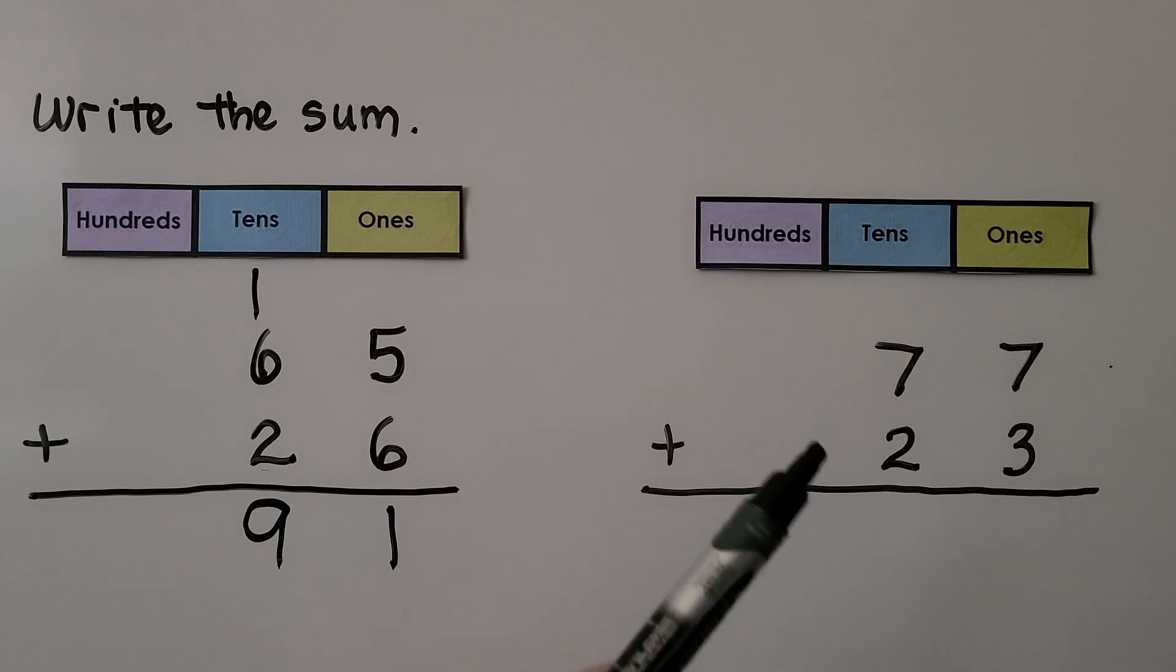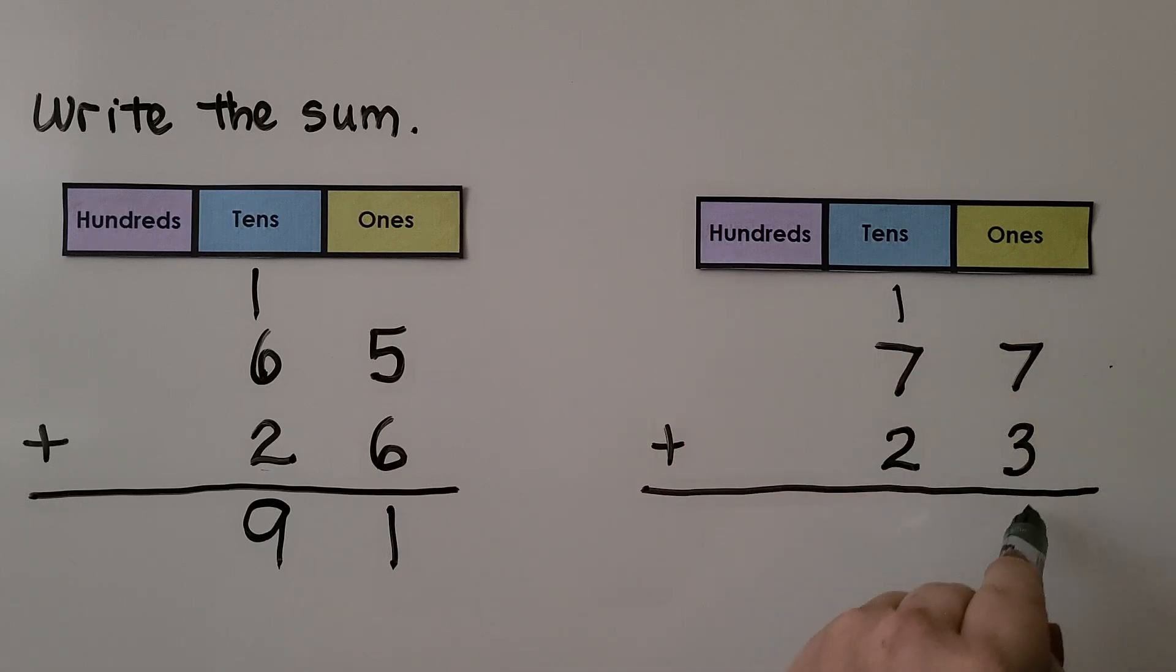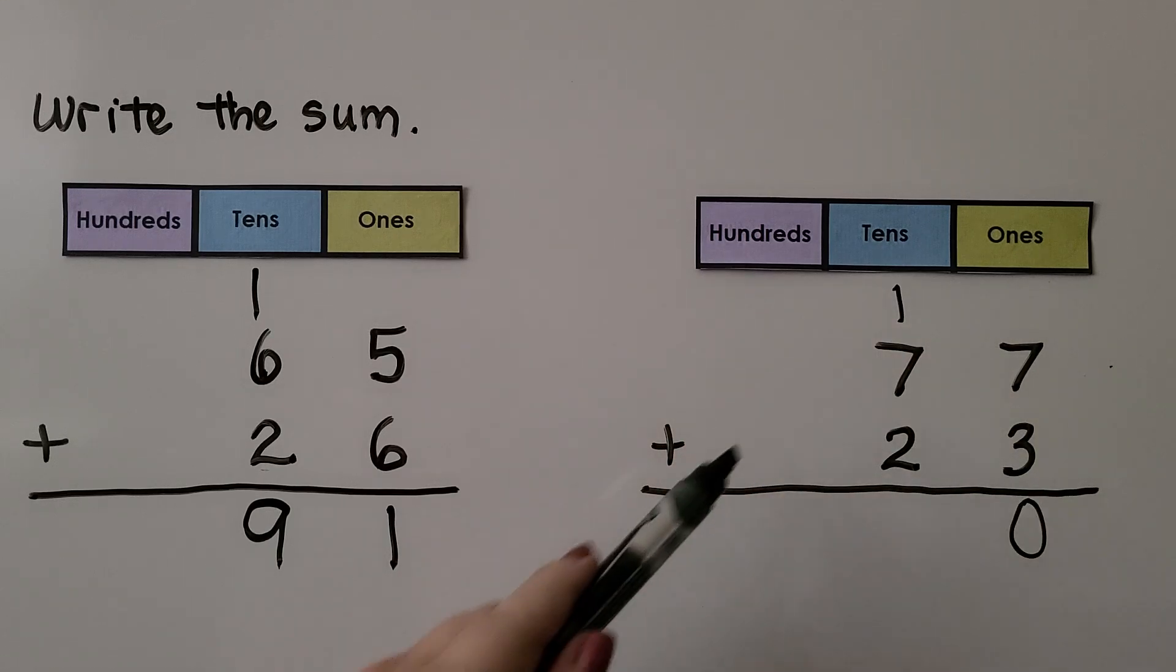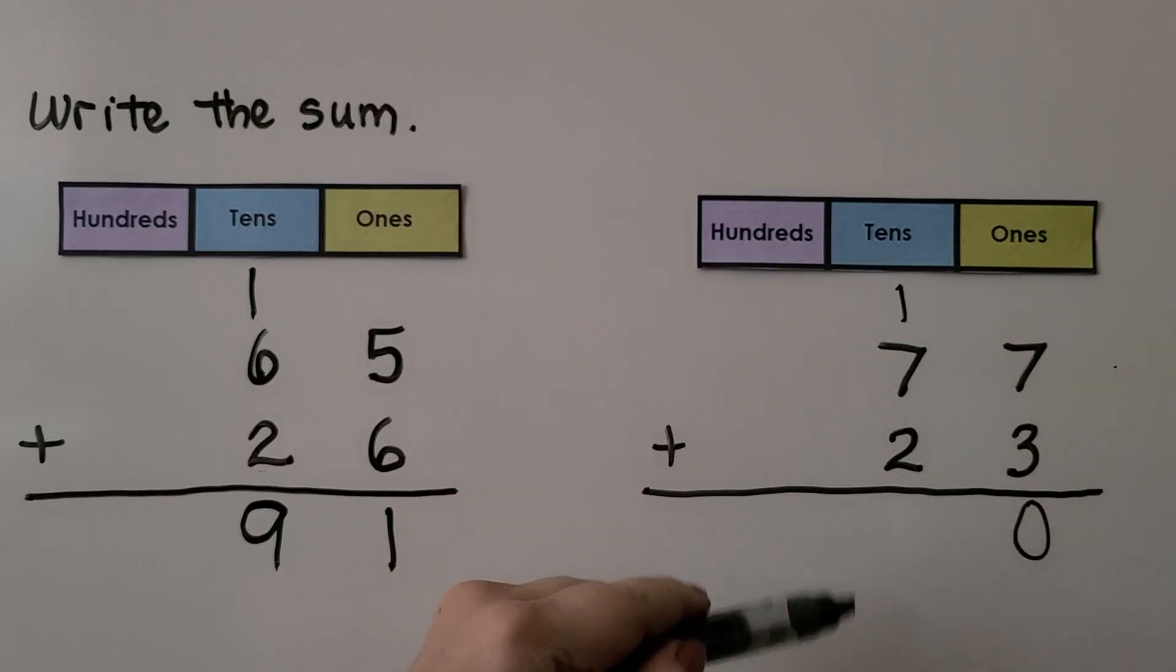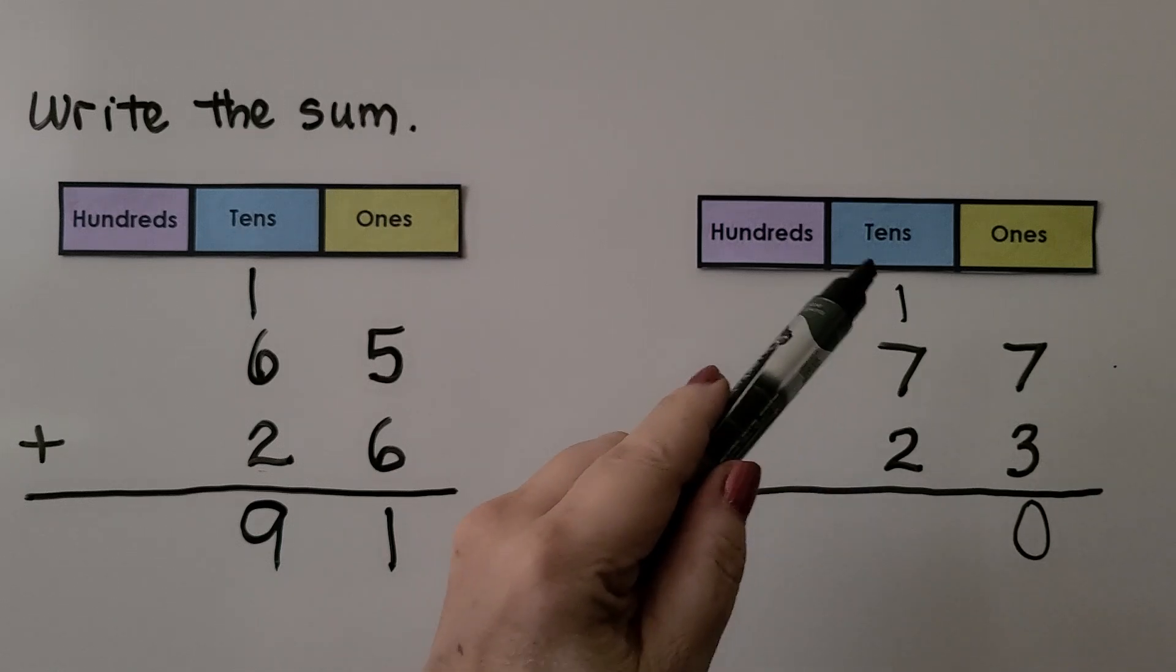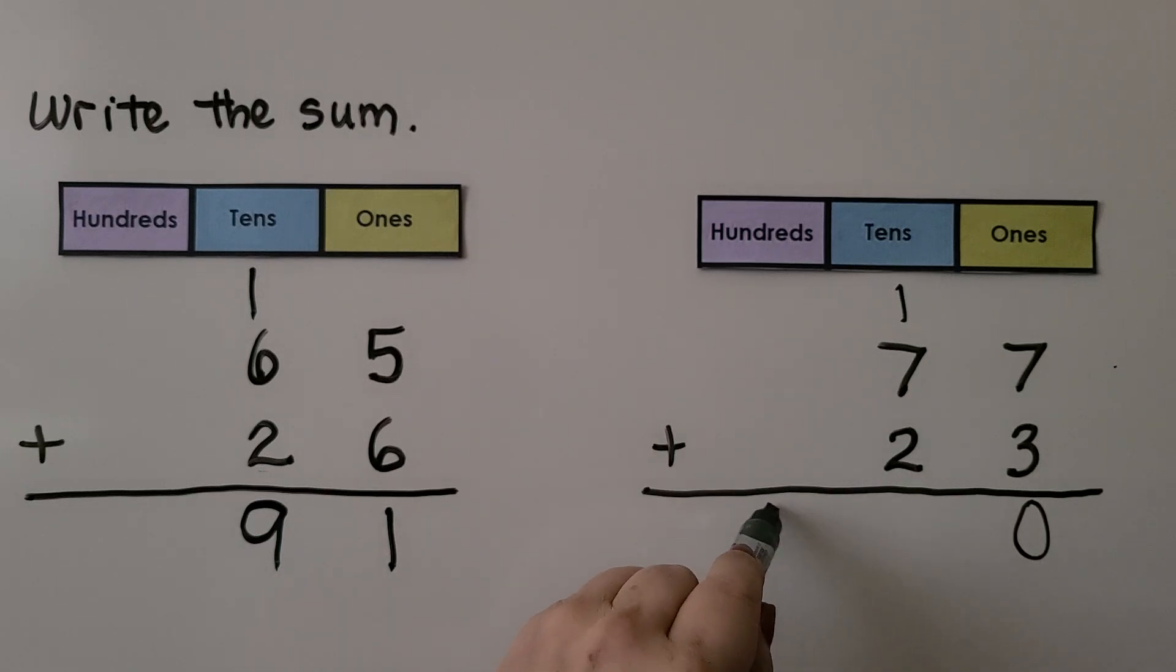Let's try 77 + 23. We start by adding the ones place: 7 + 3 = 10. That's one ten, zero ones. Now we add the tens place: seven, eight, nine, ten. Ten tens is one hundred, zero tens. So 77 + 23 = 100.